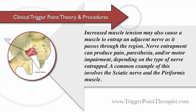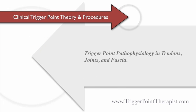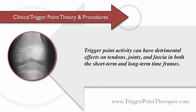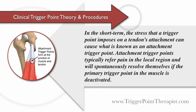A common example of this involves the sciatic nerve and the piriformis muscle. Trigger point activity can have detrimental effects on tendons, joints, and fascia in both the short-term and the long-term. In the short-term, the stress that a trigger point imposes on a tendon's attachment can cause what is known as an attachment trigger point. Attachment trigger points typically refer pain in the local region and will spontaneously resolve themselves if the primary trigger point in the muscle is deactivated.